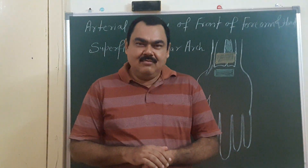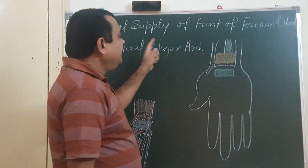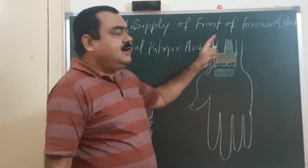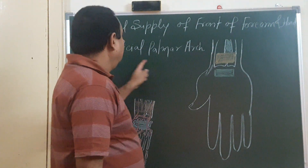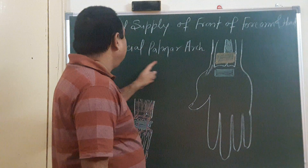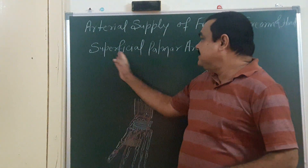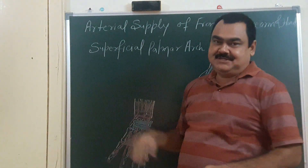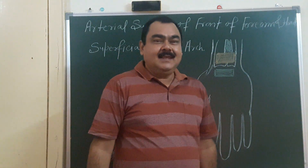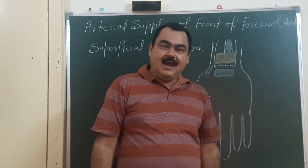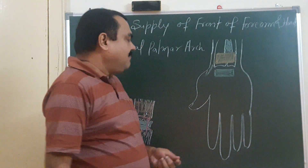Now we will discuss about the arterial supply at the front of the hand. Today we will discuss about the superficial palmar arch. In previous lectures you have seen the radial artery and ulnar artery. Now we move on to the superficial palmar arch.